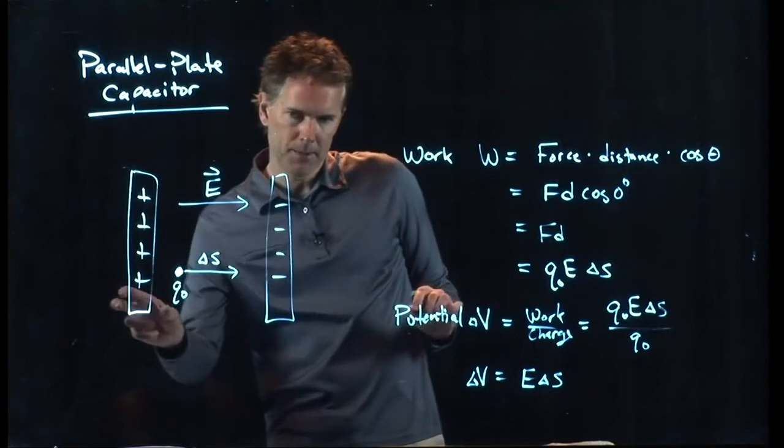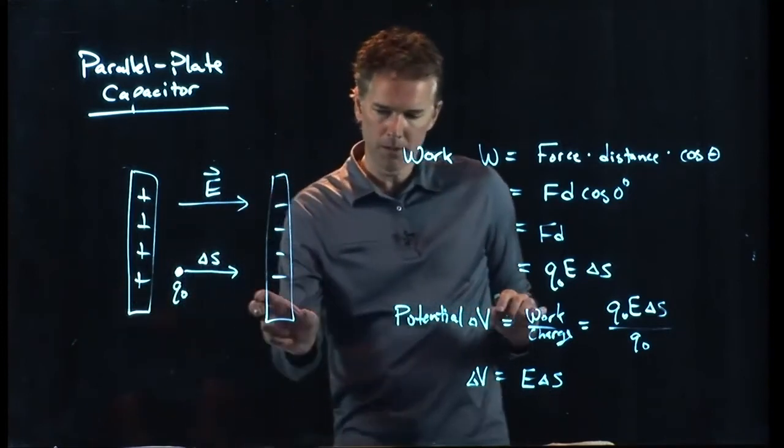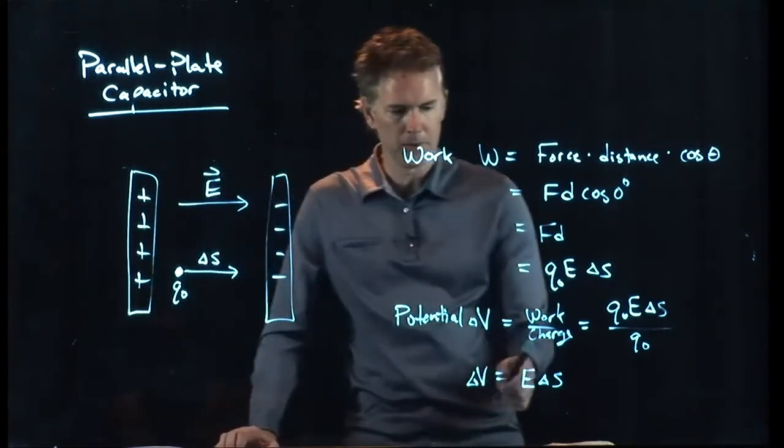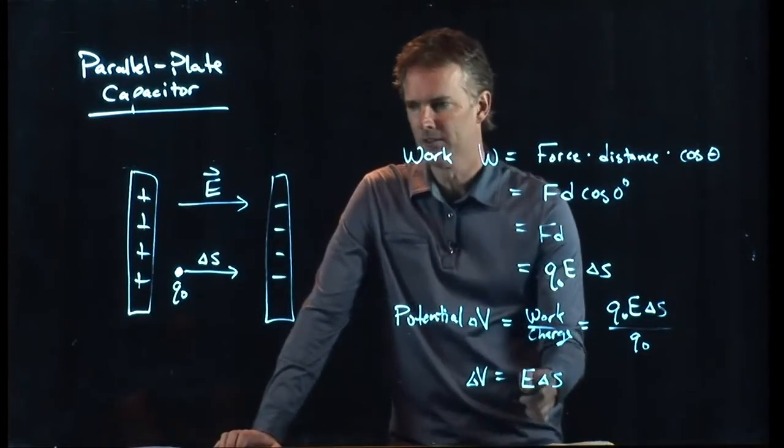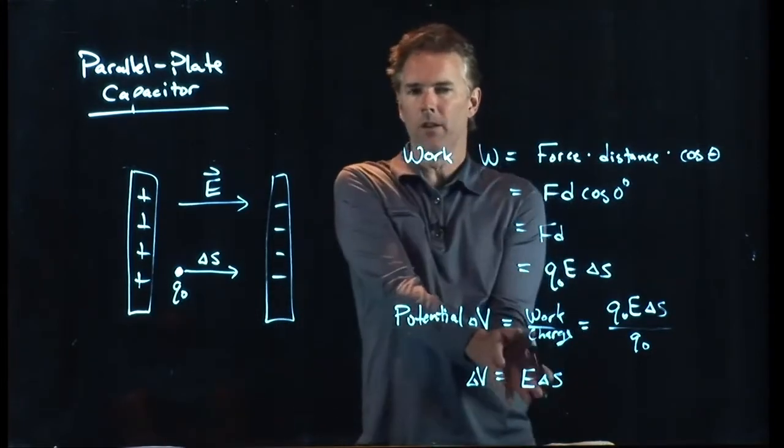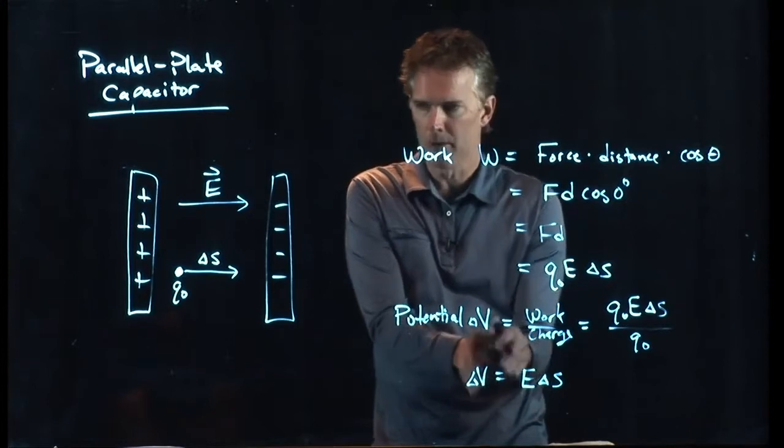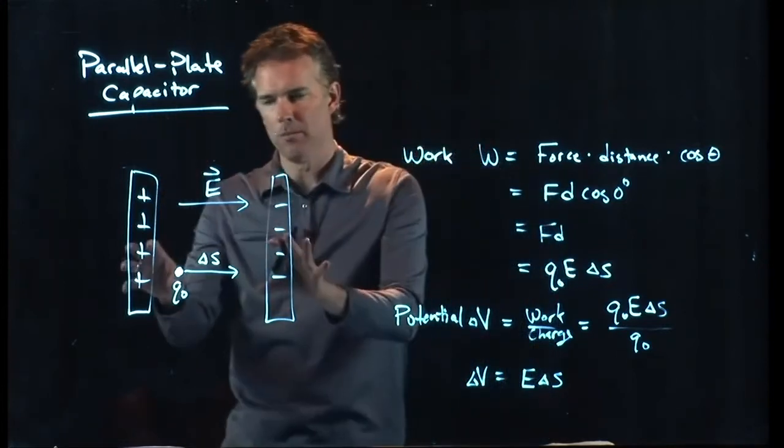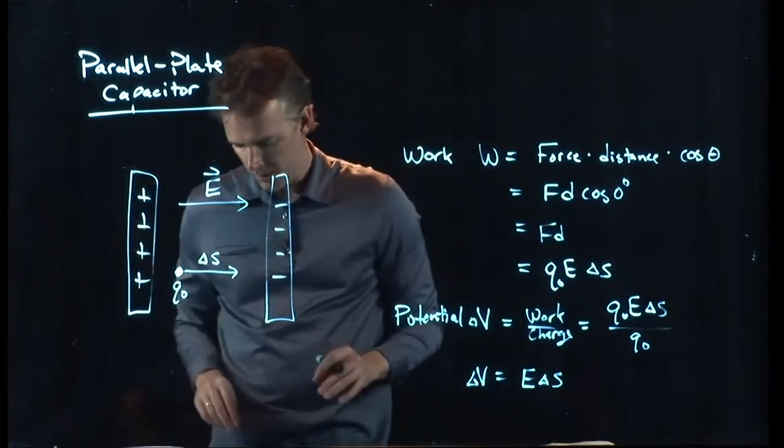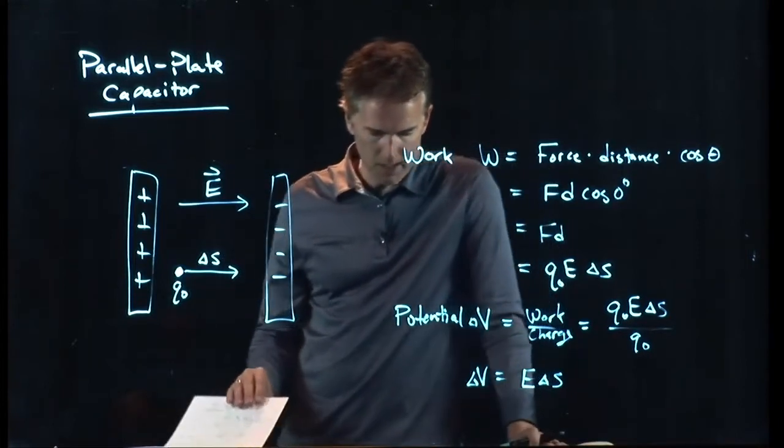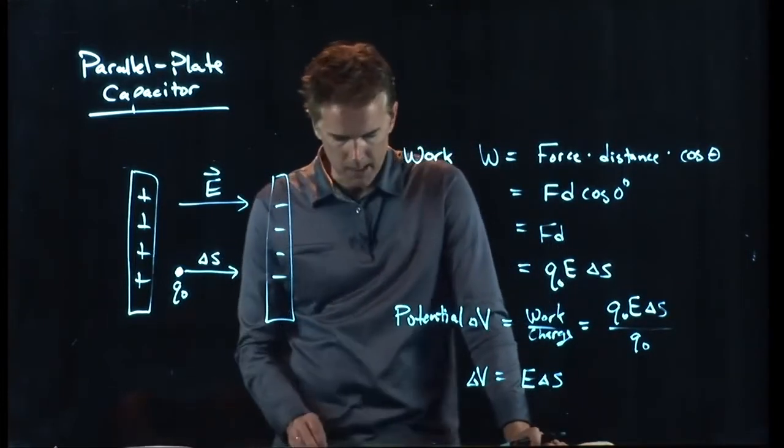Good. This one has a high potential. This one has a low potential. The magnitude of the potential difference between those two is just E delta S. Don't worry about whether this should be a plus or a minus. Go back to your picture to figure out which one should be which. All right. It seems like we might almost have what we need.